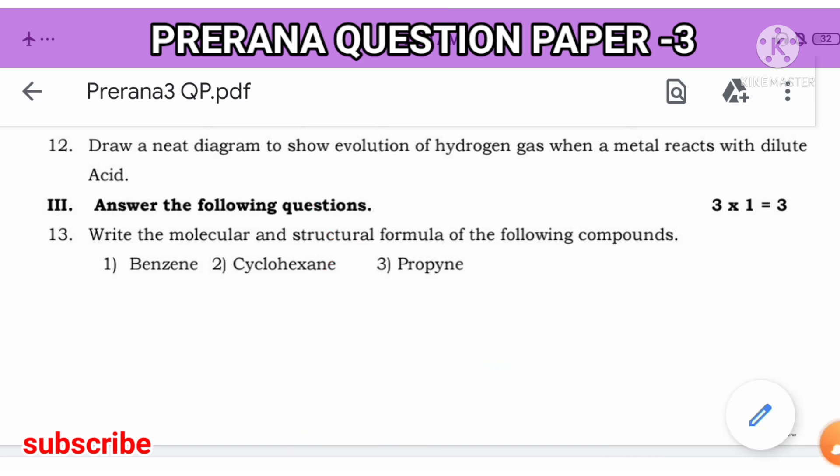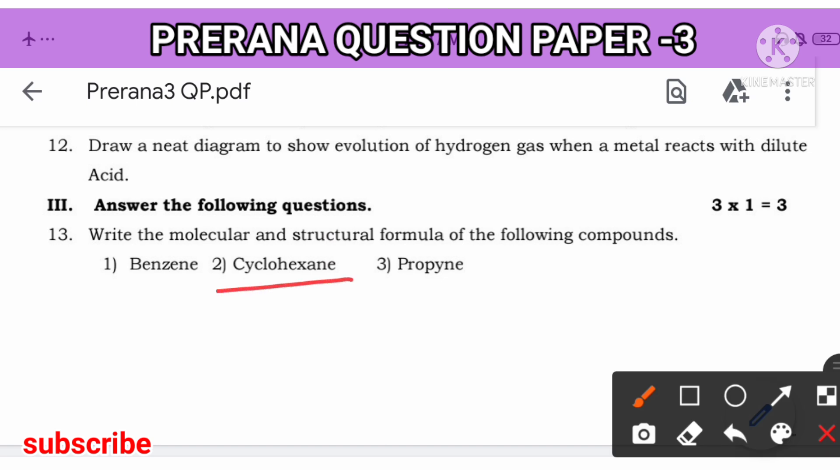Next, cyclohexane. Cyclo means you will get cyclic structure, hexane means 6. Cyclohexane formula is C6H12. I have already told you, cyclohexene and alkyne both have the same general formula.